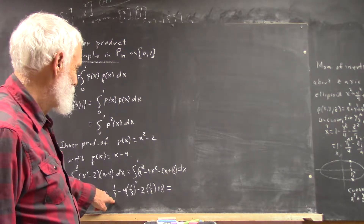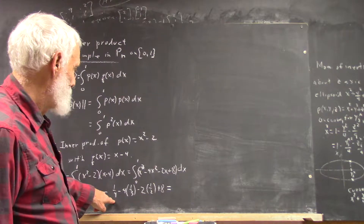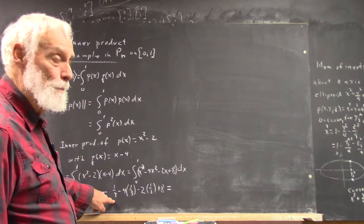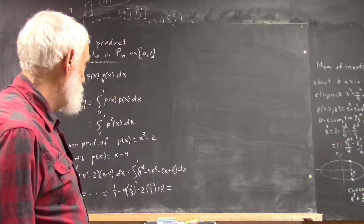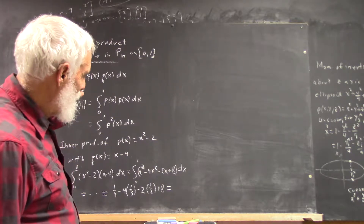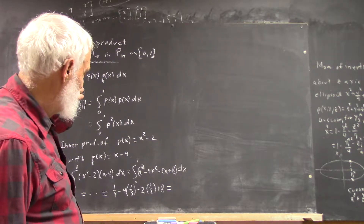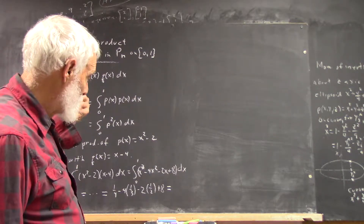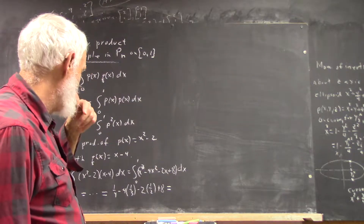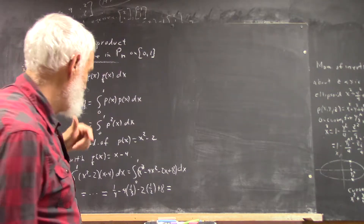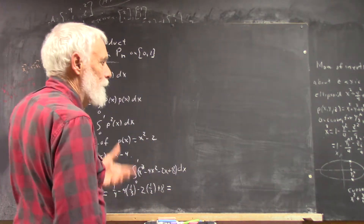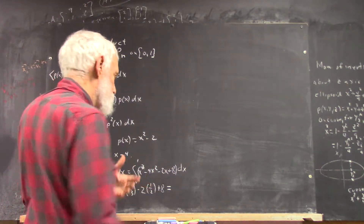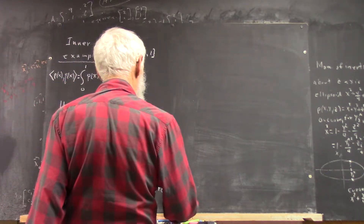That equals — well, that's 1 fourth. That's 4 thirds, and that's 1 half, which means that's negative 16 twelfths, and that's negative 3 twelfths, which is negative 13 twelfths. Is that 1 fourth minus 4 times 1 third? Yeah. So negative 13 twelfths added to 6 is 49 twelfths.